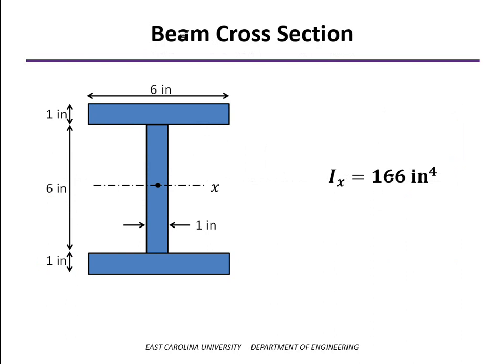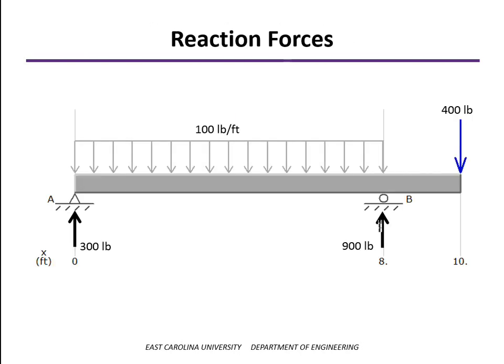In our first example, we're going to look at an I-beam that's made up of 1 by 6 members. In an earlier video, we calculated the moment of inertia of this cross-section as 166 inches to the fourth. The first thing we need to do is determine the bending moment, and to do that we're going to draw the bending moment diagram. The first step is to find the reaction forces — we end up with a reaction of 300 pounds on the left support and 900 pounds on the right support.